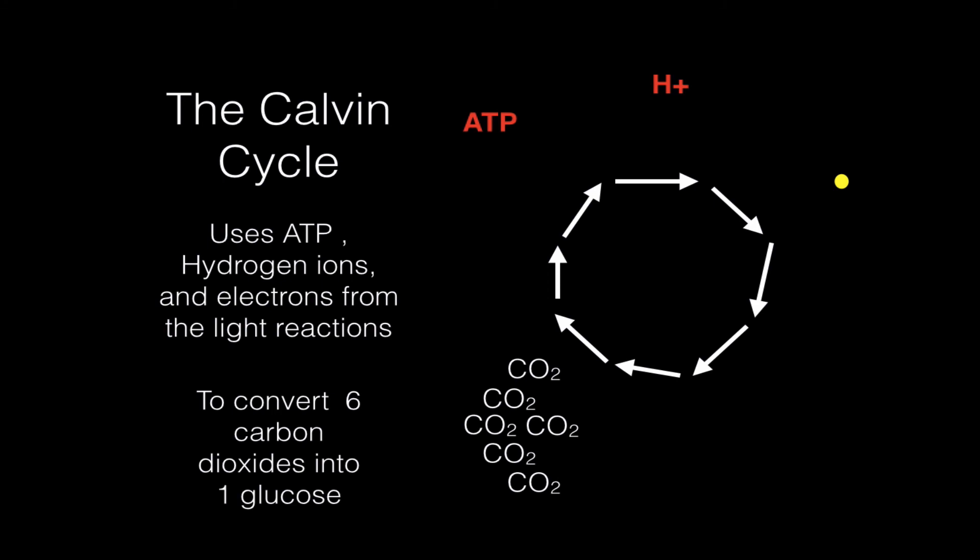So this wheel here represents the Calvin cycle. And what we're going to do is we're going to add the ATP energy, we're going to add the hydrogen ions, and we're going to add the electrons, and finally six carbon dioxides.